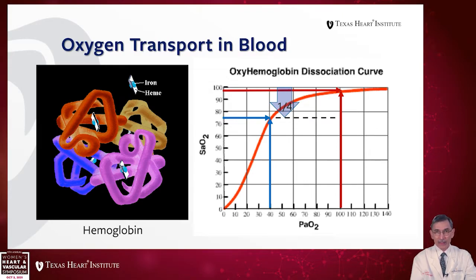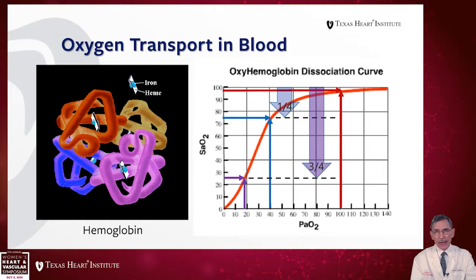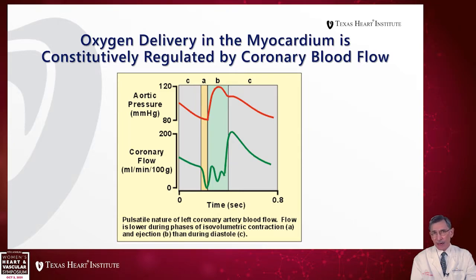This is quite different from the heart. The heart uses as much as three quarters — that is, three out of four of the bound oxygens — and can operate between about 50% and 25% saturation. It turns out that 25% saturation occurs at a pressure that is not physiologically relevant. In other words, myocardium can use 100% of the blood 100% of the time. So oxygen delivery in the myocardium is constitutively regulated by coronary blood flow — the only way to get more oxygen is to increase the flow of blood and therefore the content of oxygen flowing by.